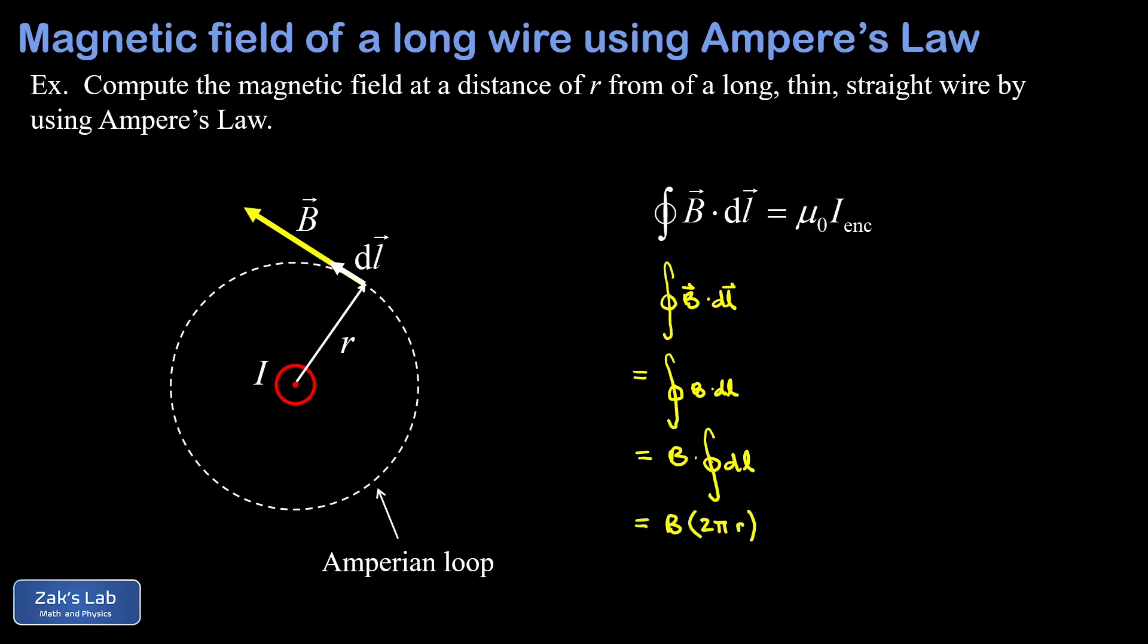Now that the integral is simplified, we can set that equal to the right-hand side of Ampere's law, which says the path integral should turn out to be μ₀ times the enclosed current. The enclosed current here is just I, so we get B times 2πR equals μ₀ times I.